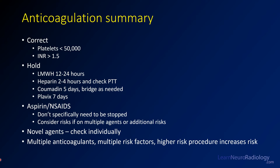In summary, before doing a spine procedure, you need to check these things: correct if platelets are less than 50,000 or if the INR is greater than 1.5. Lovenox or low molecular weight heparin — hold for 12 to 24 hours; 12 hours for the prophylactic DVT dose, 24 hours for the therapeutic dose. Heparin — hold for two to four hours and recheck a PTT. Coumadin — patients typically need to be off for five days with a bridge to heparin or low molecular weight heparin if needed. Plavix — typically five to seven days. Aspirin and NSAIDs — you don't specifically need to stop, but consider risks if patients have other hemorrhage risk factors. Anytime you have multiple risk factors, you increase the risk of hemorrhage after a procedure.